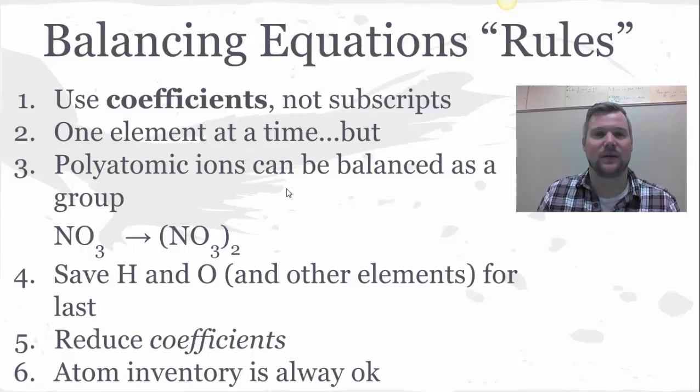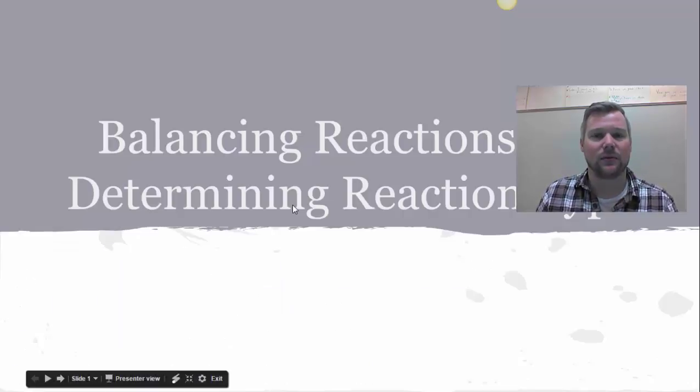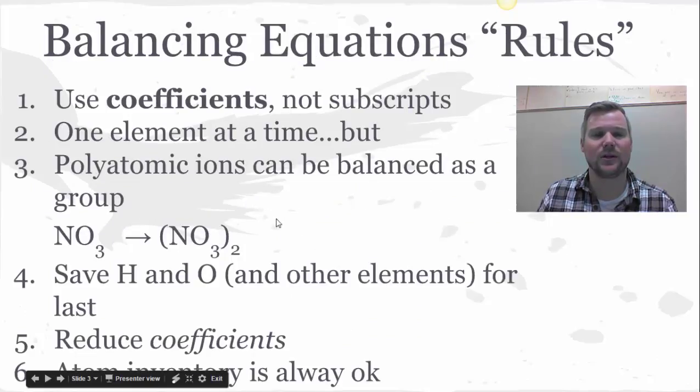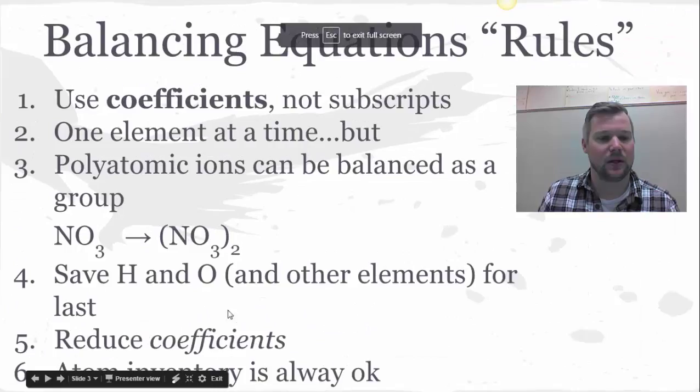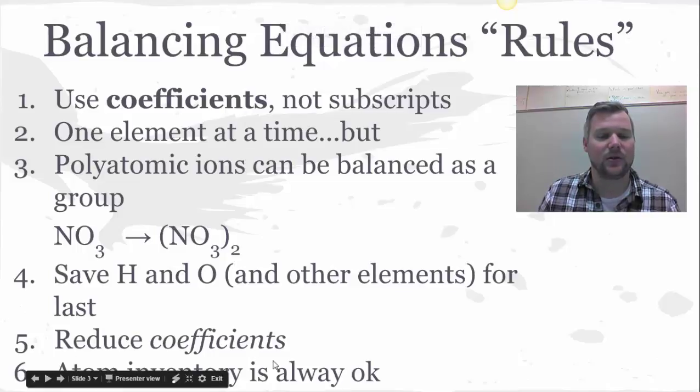Elements you want to save for last, specifically hydrogen and oxygen, those are easiest to balance by themselves because they have the least going on. Reduce your coefficients when you're working on these. And then you can always do an atom inventory, which would mean you're making a T-table for the reactants on the left and products on the right, keeping track of each element, but this is something that you'd want to move away from as you become more skilled.